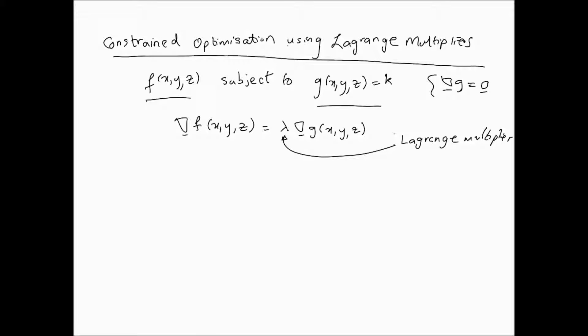The Lagrange multiplier's role is quite simple — it's connecting these two functions: f, which is the objective function (the one you want to find the maximum or minimum value of), and g, which is the constraint. This Lagrange multiplier helps set up an equation which encompasses the entire relationship. Using these relationships, we will get a set of equations that we have to simultaneously solve to get the maximum or minimum value.